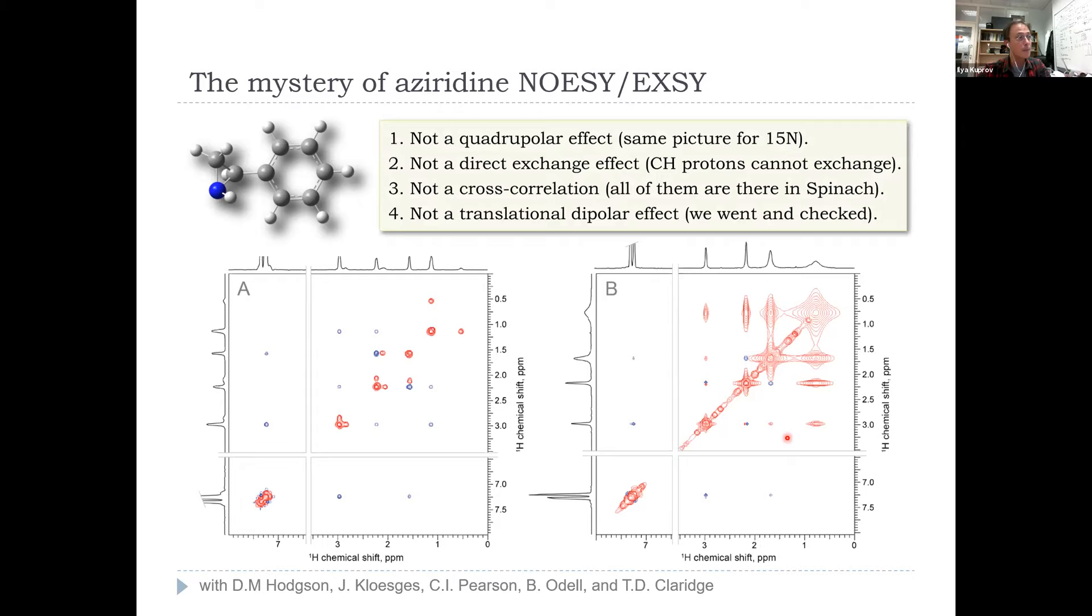But some have become positive between positions that cannot possibly exchange, like between that proton and that proton there, or this proton and this proton. We are starting to see strong positive NOEs between positions that don't exchange for the viscosities that really must compel all NOEs to be negative. So suddenly they became positive. Barbara's question was, what is going on?